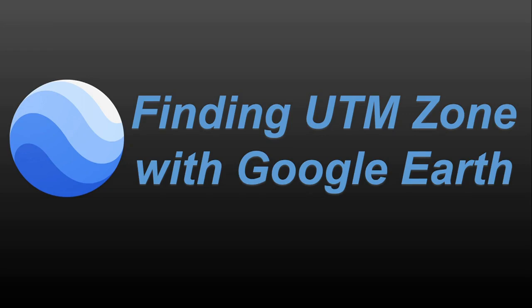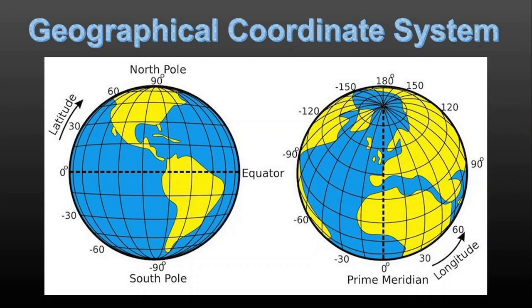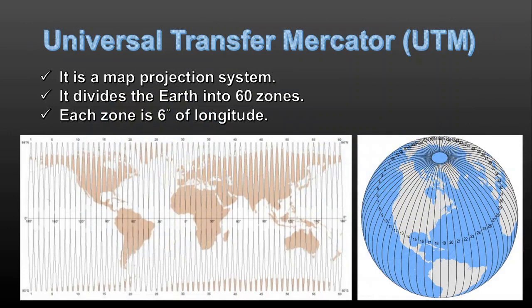In this video I'm going to show you how you can find the UTM zone number with Google Earth very quickly. You are familiar with the geographical coordinate system that involves longitude and latitude, but the Universal Transverse Mercator (UTM) system is a specific and useful map projection system that divides the Earth into 60 zones.